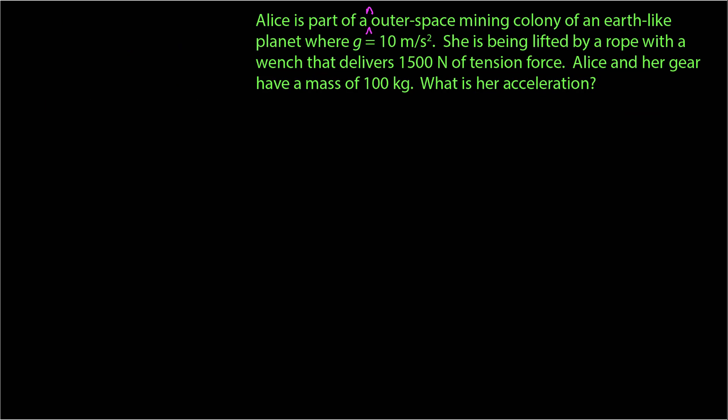A typical problem might look like this. Alice is part of an outer space mining colony of an Earth-like planet where g is equal to 10 meters per second squared. Ah, isn't that convenient? She is being lifted by a rope with a winch that delivers 1,500 newtons of tension force. Alice and her gear have a mass of 100 kilograms. What is her acceleration?